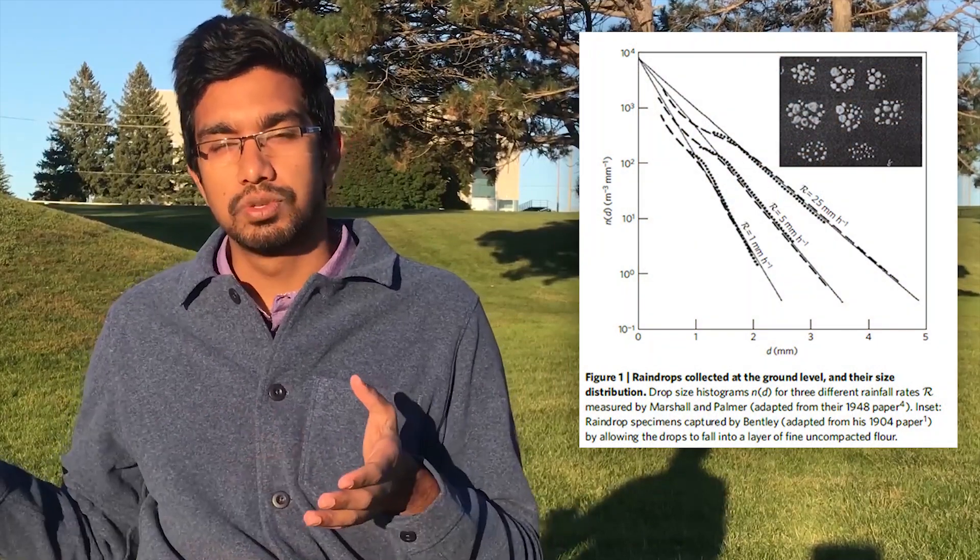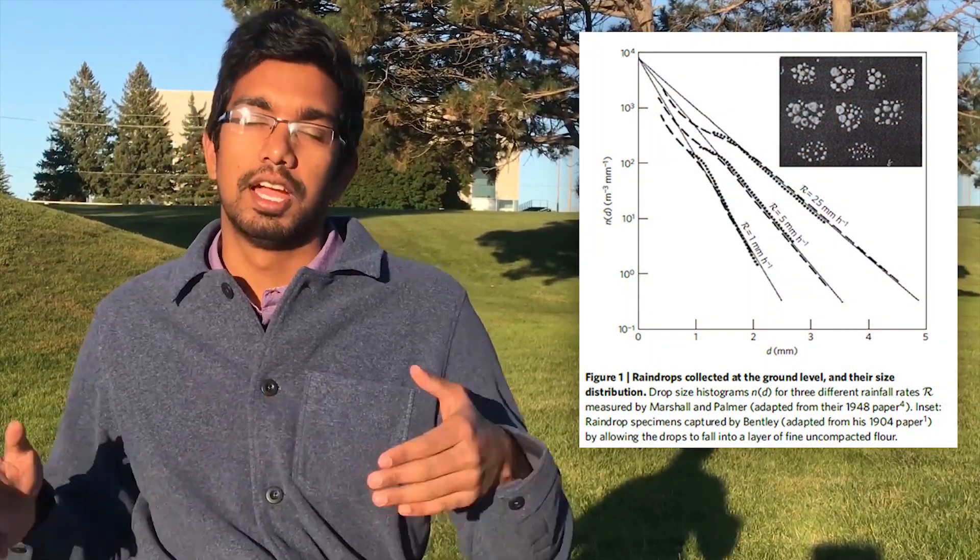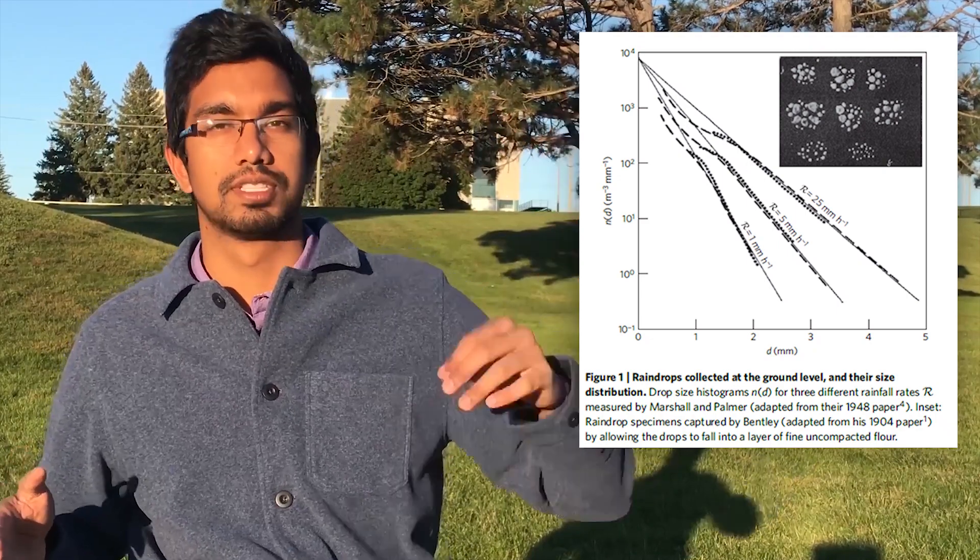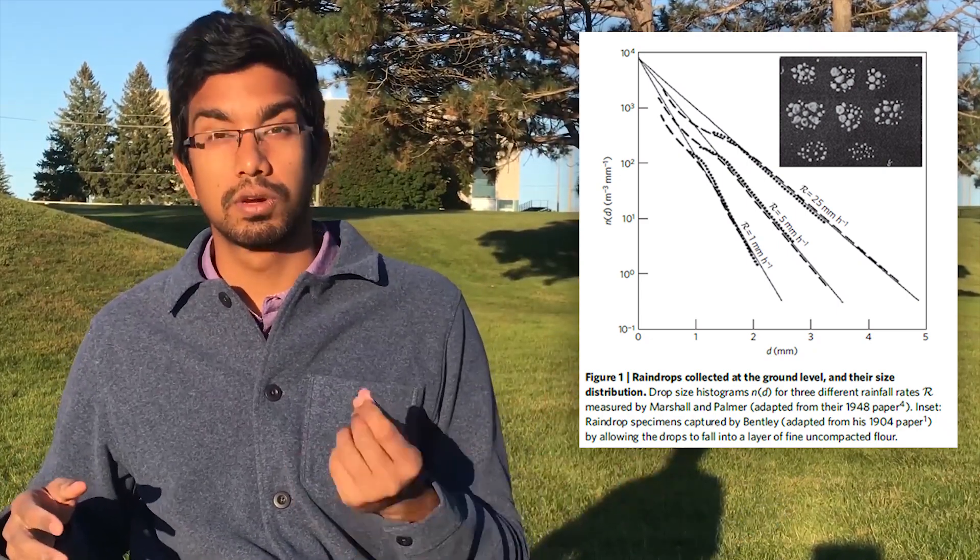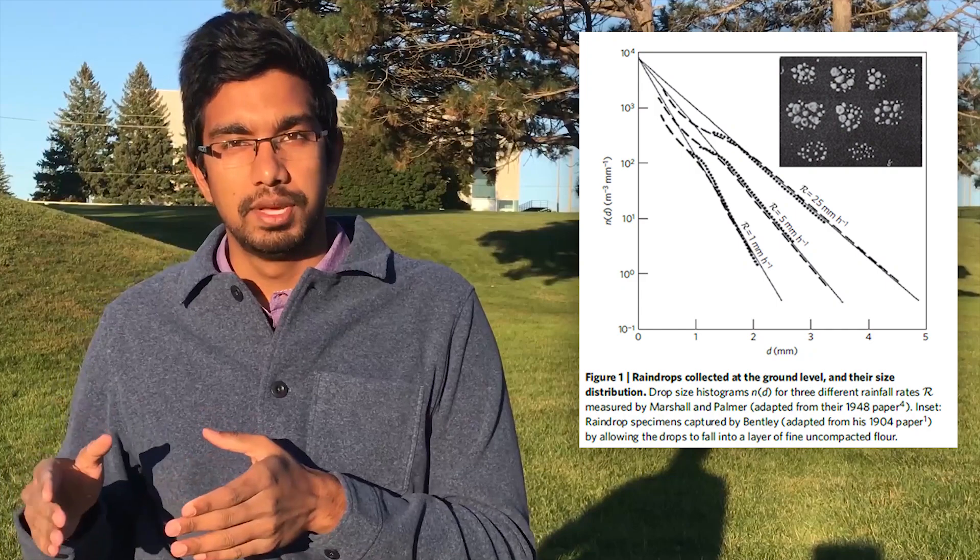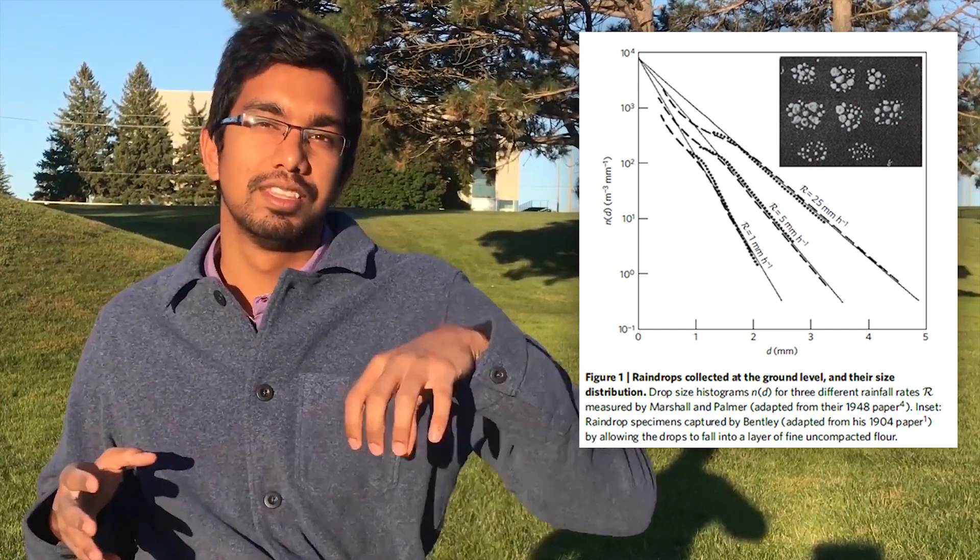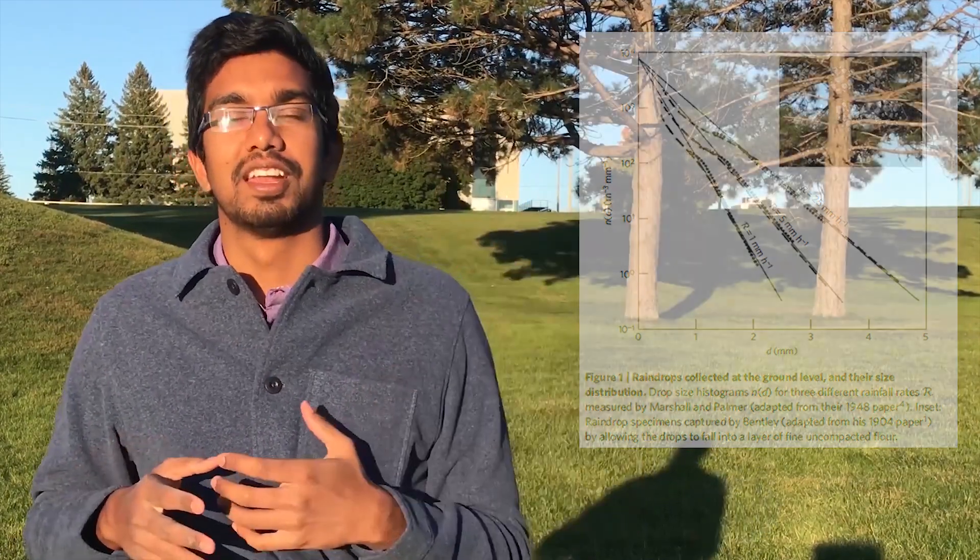Now, they plotted this distribution on a graph. And on the x-axis, you have the number of droplets. And on the y-axis, you have the size of a droplet, of each of these droplets. Now, this graph is a log-scale graph, which basically means that there are many, many more number of droplets which are smaller than those which are actually bigger.